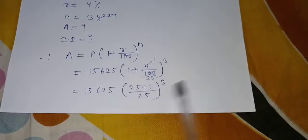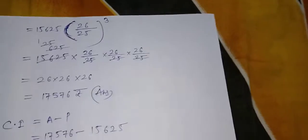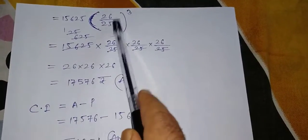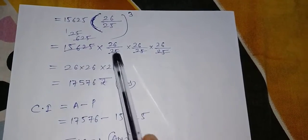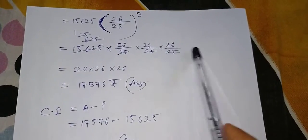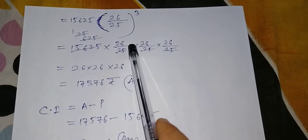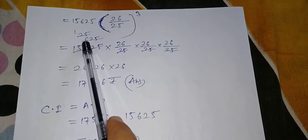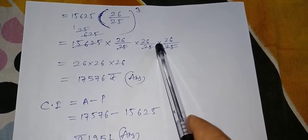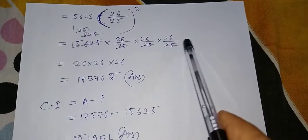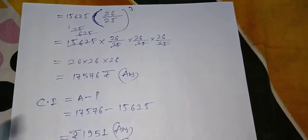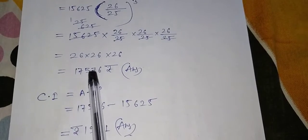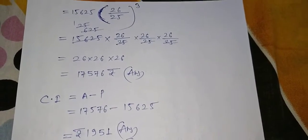So now 25 plus 1 is 26 by 25 cube, 26 by 25 whole cube. Same number I write here and I write this number 3 times. Whole cube means we have to write 3 times. So when I wrote 3 times, this 25 and 15,625 got cancelled, it became 625. This 625 and 25 got cancelled, it became 25. So 26 into 26 into 26 is 17,576. So this is our amount.